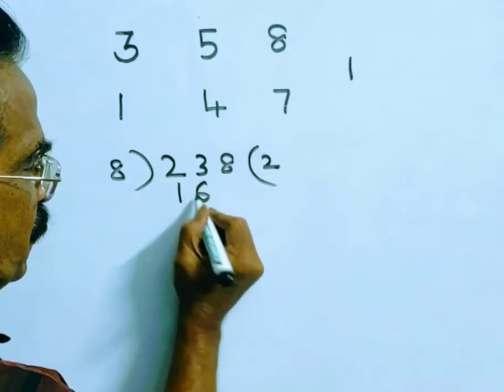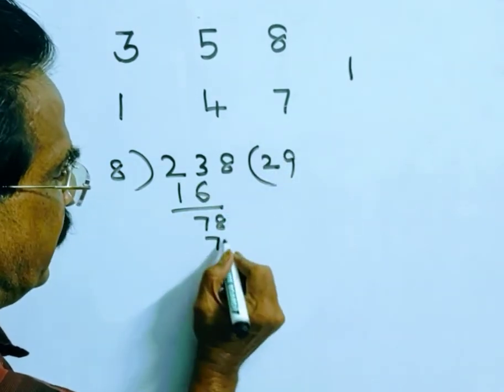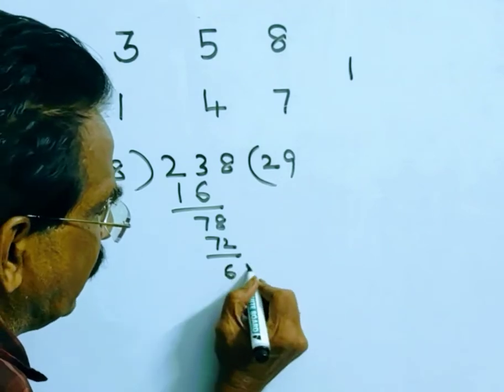8 into 238: 8 into 2 is 16, 78 minus 72 equals 6. 6 is the first remainder, friends.